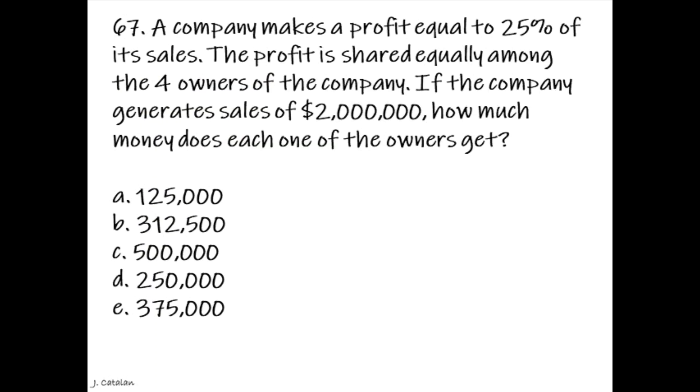Question: A company makes a profit equal to 25% of its sales. The profit is shared equally among four owners. If the company generates sales of $2 million, how much does each owner get? Answer: $125,000.